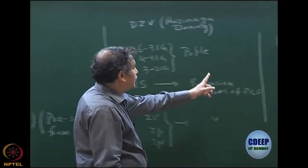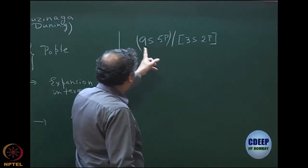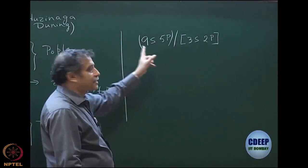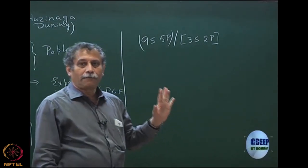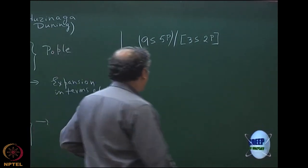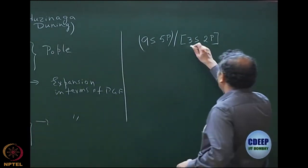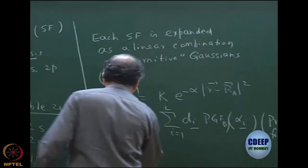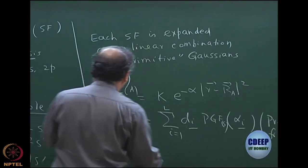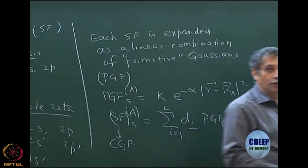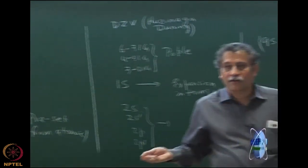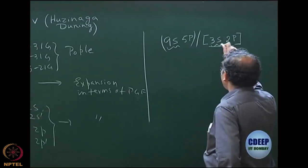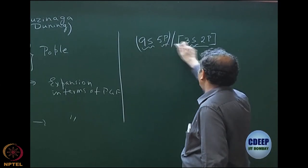The first numbers in parentheses are the total number of primitive Gaussians used: 9 s-type and 5 p-type. From these, we construct a contraction — these are called contracted Gaussian functions (CGF). So now we do not work with Slater functions; we work with contracted Gaussians. We contract the 9s-type to 3s-type functions and 5p-type to 2p-type.